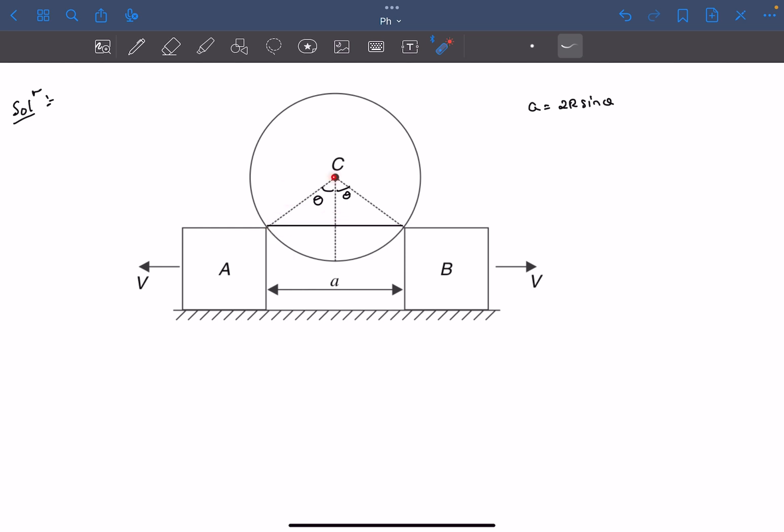We can say dA by dt, which is the rate at which this distance increases, would be V plus V which is 2V. If I substitute the value of A from here into this derivative, we get 2r times the derivative of sin theta which is cos theta, but we have to multiply another d theta by dt term. This equals 2V. So from here we get d theta by dt as 2V divided by r cos theta.